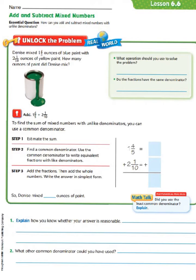Let's start by looking at our word problem. Denise mixed 1 and 4/5 ounces of blue paint with 2 and 1/10 ounces of yellow paint. How many ounces of paint did Denise mix? Let's look at this step by step. First, what operation should you use to solve the problem?